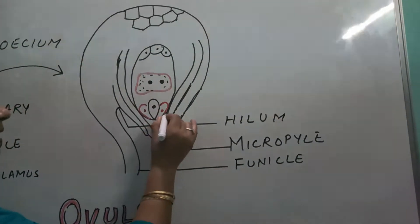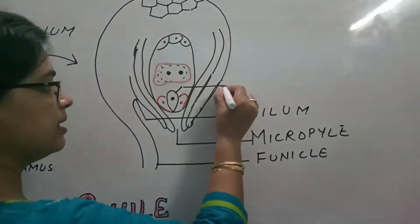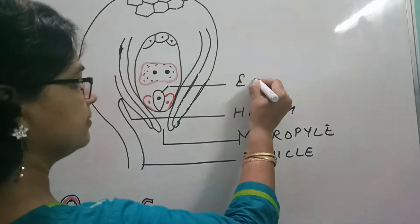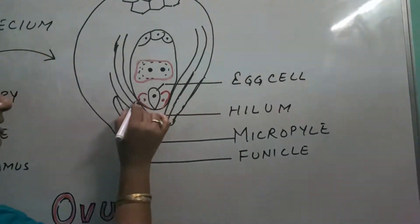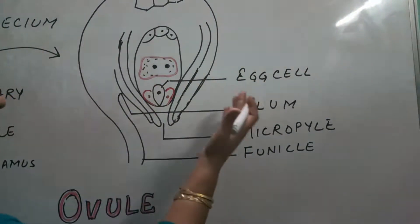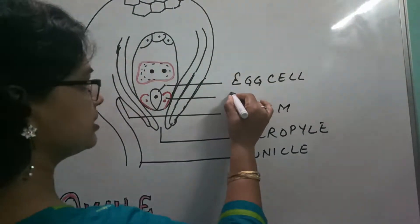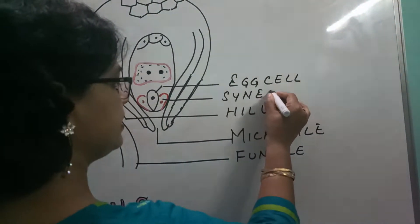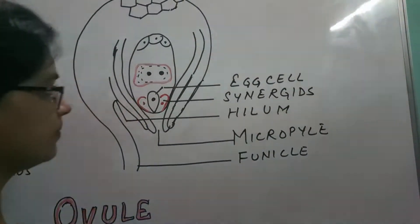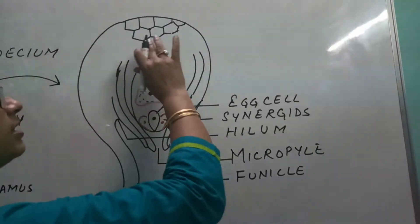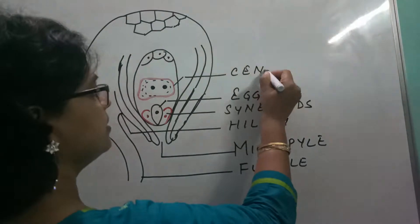The largest cell, the largest cell among these 3, this one, this is to be termed as egg cell. Two cells which are present on either side of this egg cell, it is termed as synergids, S-Y-N-E-R-G-I-D-S. In between, the largest cell of this embryo sac, it is termed as central cell.